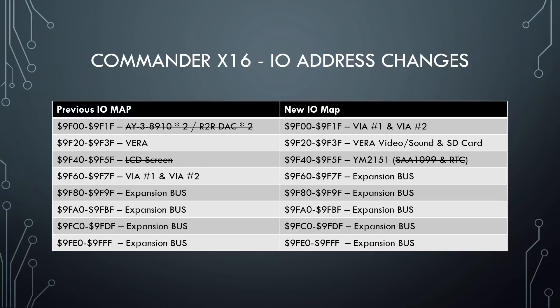There'll be routines in BASIC to access the chip without having to access it directly — that's something they're going to work on. Also, that freed up five expansion ranges for the IO bus. You could obviously tie a card to a specific range if you wish, or you could use a jumper and use multiple ones on a single card if you wanted to, and now you just have one more available.